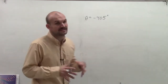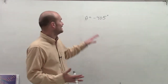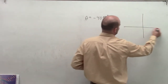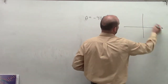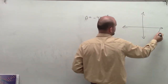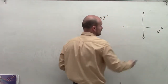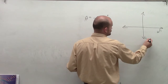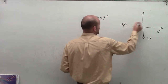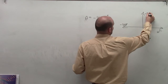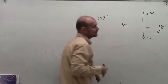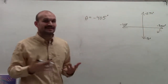The first thing we need to do is determine what quadrant negative 405 degrees is in. So we're going to sketch the angle to get an idea of where it lies. Remember, it's a negative angle, so we're going to go in the negative direction. Going in degrees, this would be negative 90 degrees, negative 180 degrees, negative 270, and then negative 360 degrees.